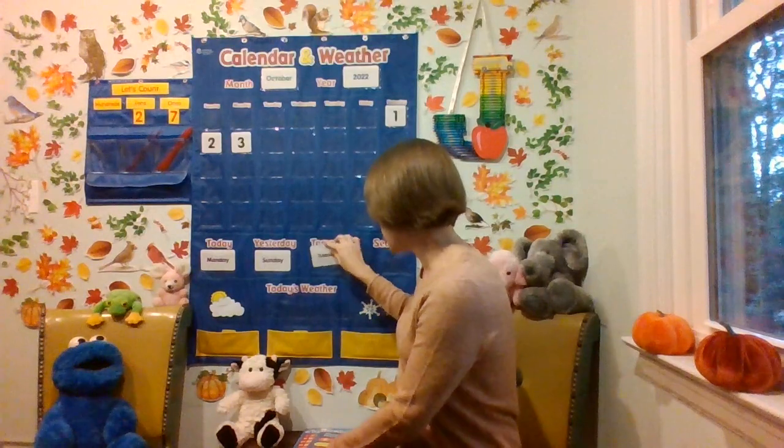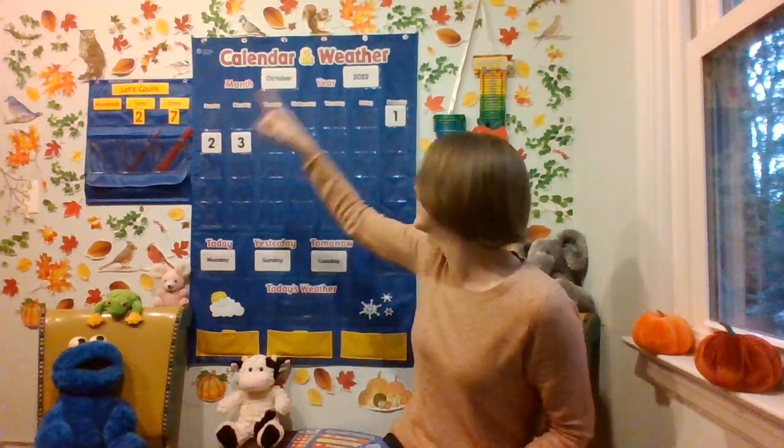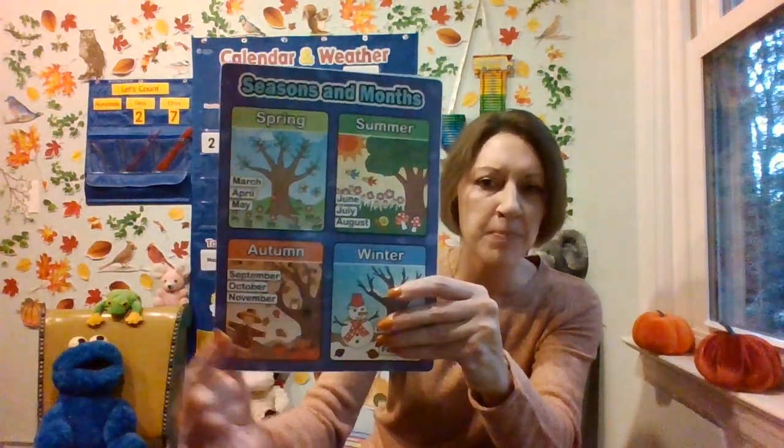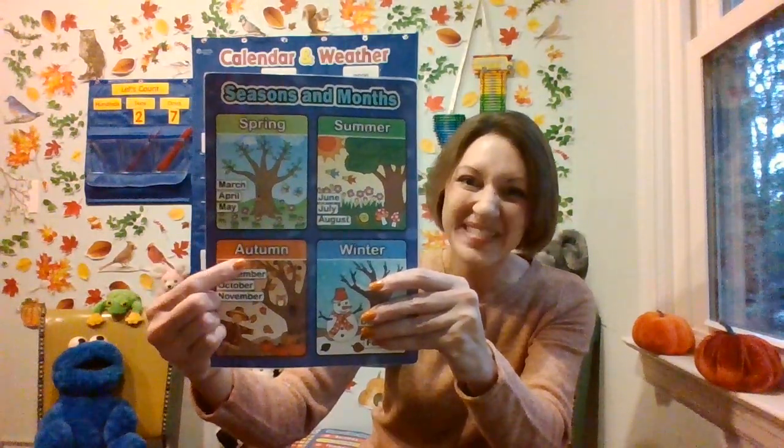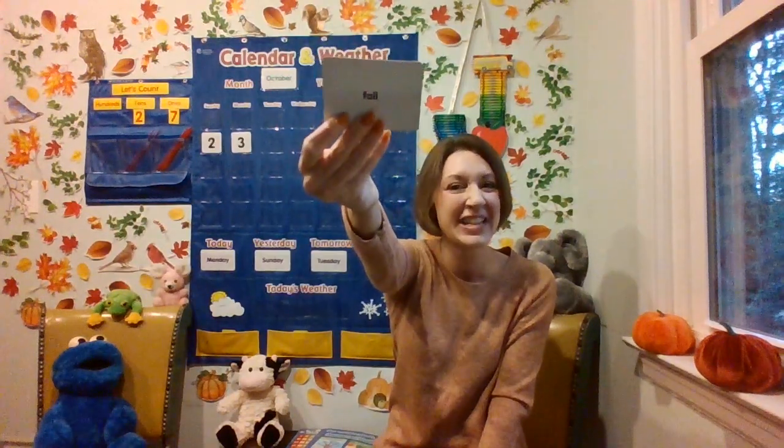Do you recall the season we are still in? I know there are some hints all over the place. Let's look at our seasons and months resource. Here's October — look at the picture and word. It's called autumn. And what's another name for autumn? That's right: fall, like the falling leaves.